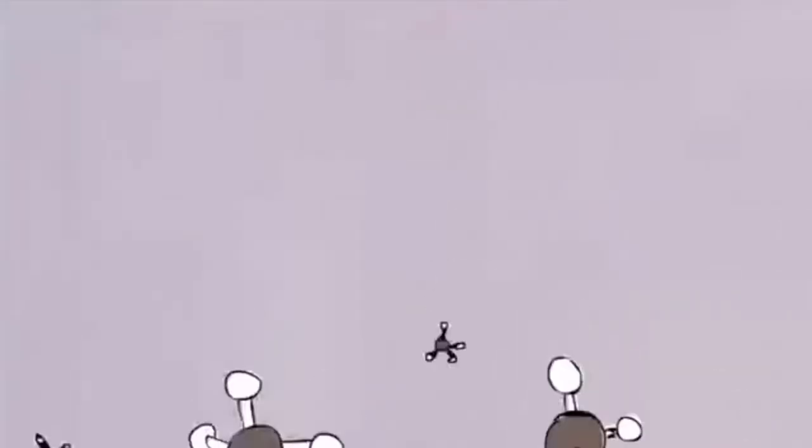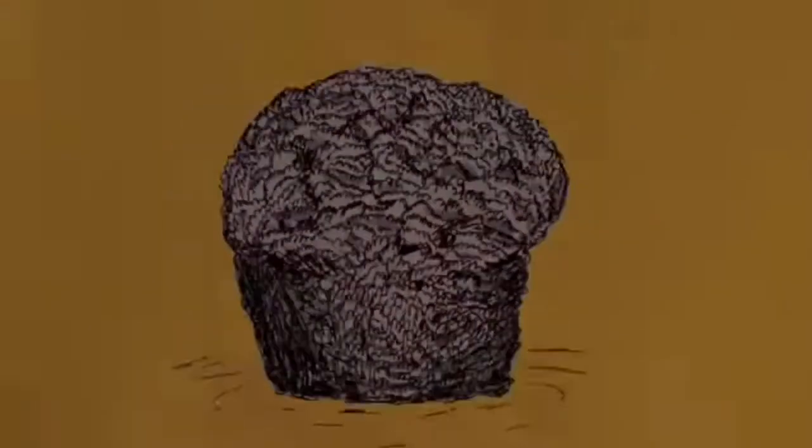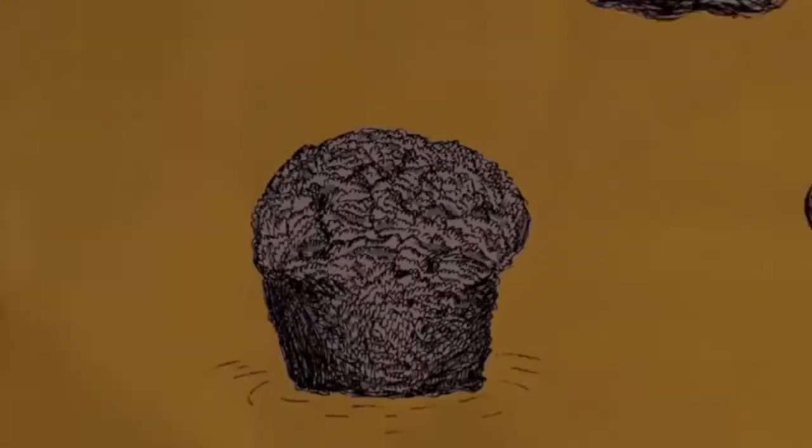Some microbes consumed hydrogen gas and others produced methane as a waste product. Biology began to affect the atmosphere. By about 3.5 billion years ago, stromatolites, mounds made by microbes, populated the world's beaches.